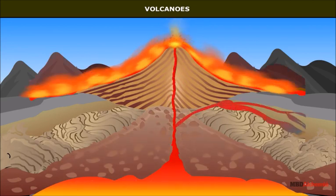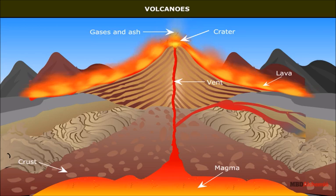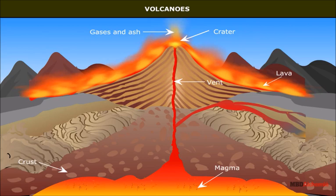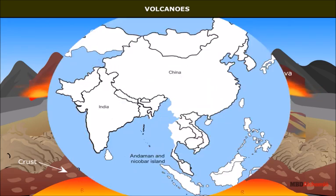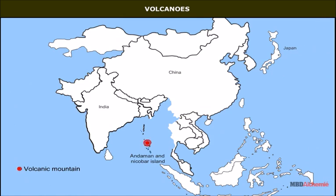This heat rises in the form of currents. Volcanic eruptions take place both on the seafloor as well as on land. Some of the islands belonging to the Andaman and Nicobar Island groups of India are peaks of volcanic mountains resting on the seabed.